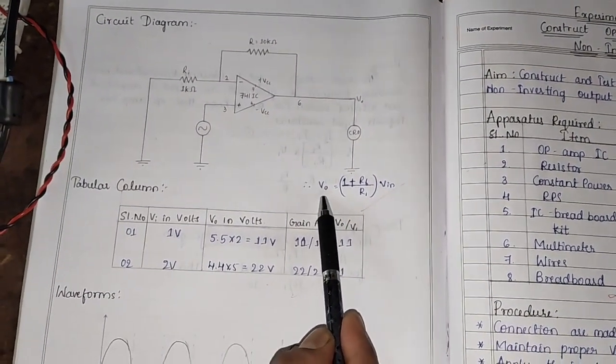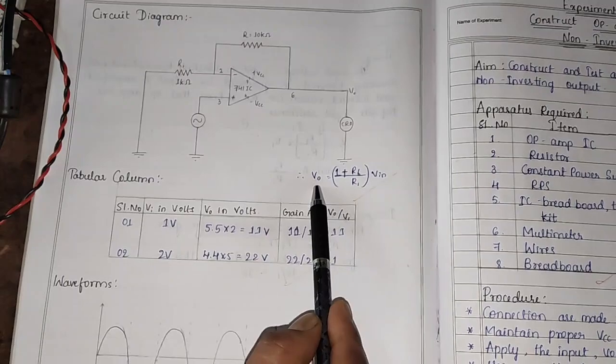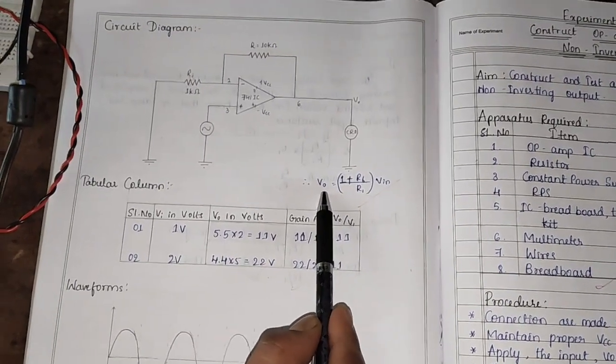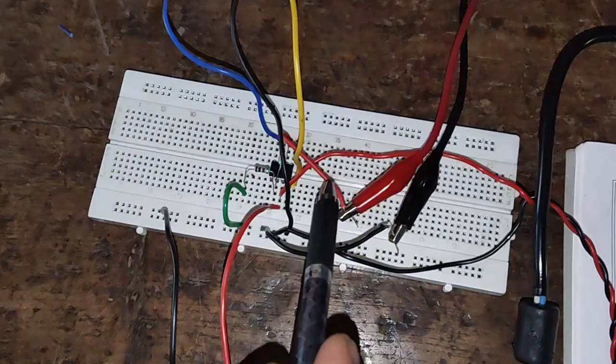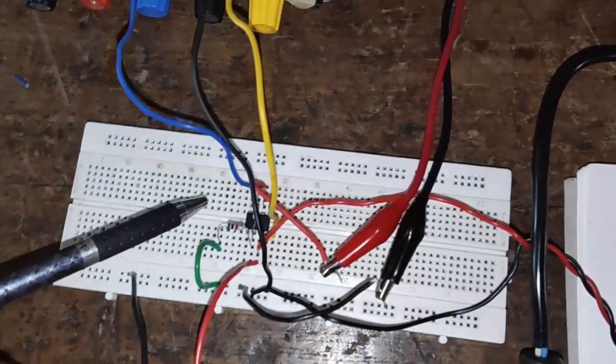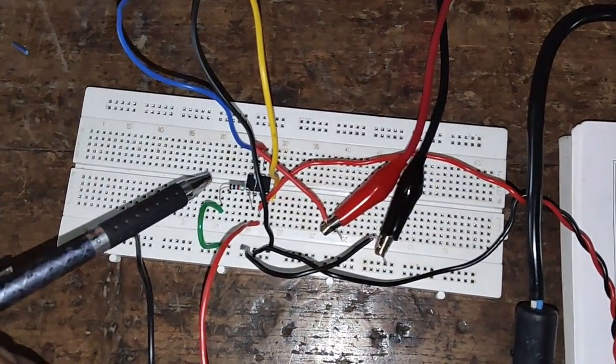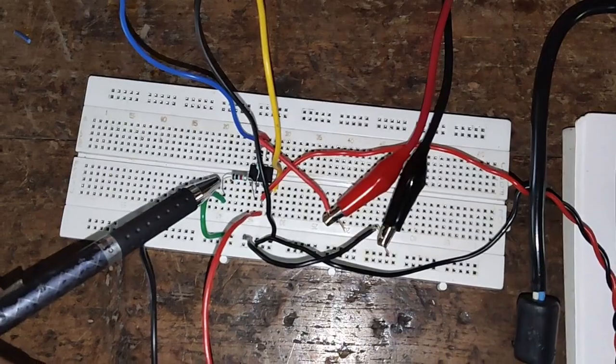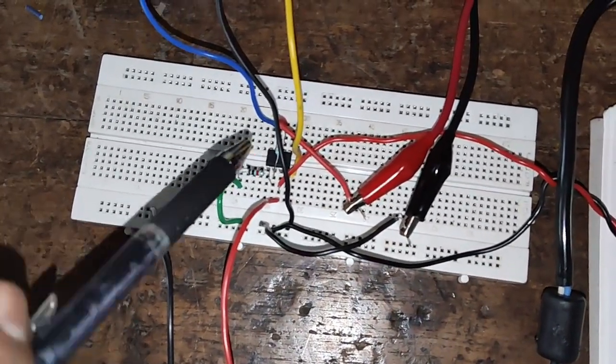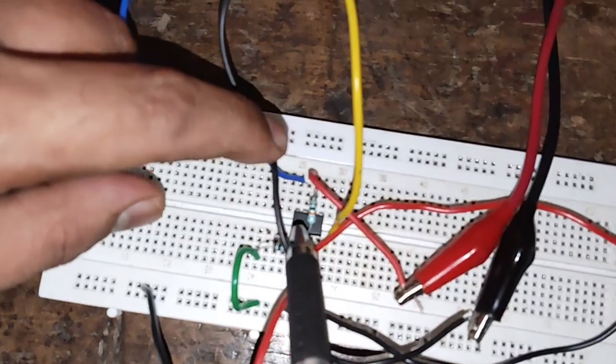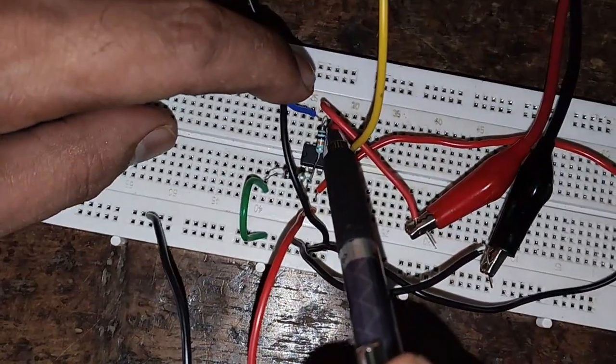Now let's see how this circuit can be conducted or performed on breadboard. Here on the breadboard, we have connected the op-amp 741 IC, the 1 kilo ohm resistor to pin number 2, and the 10 kilo ohm resistor from pin 2 to pin 6.